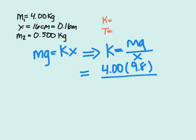The spring extends 16 centimeters or 0.16 meters. When we solve for that, we get that the spring constant is 245 newtons per meter.